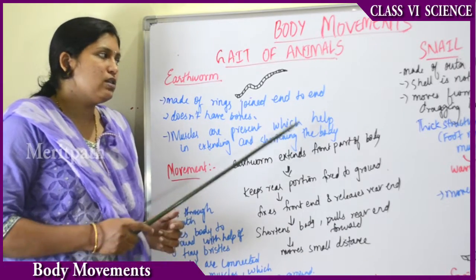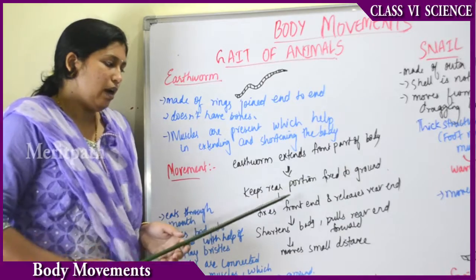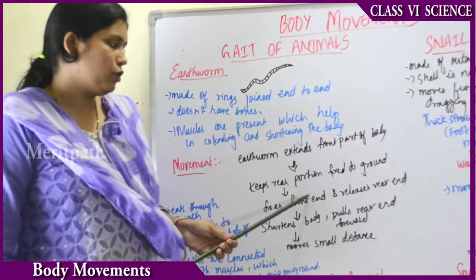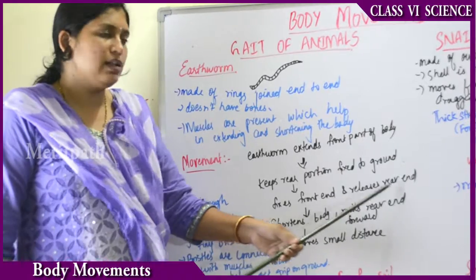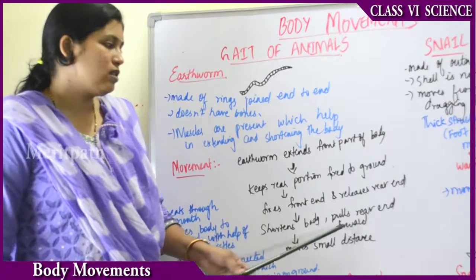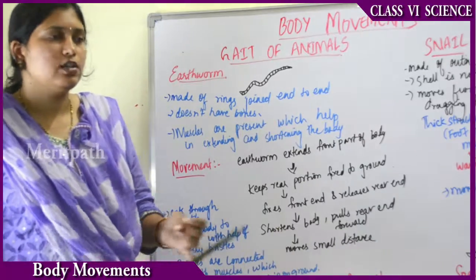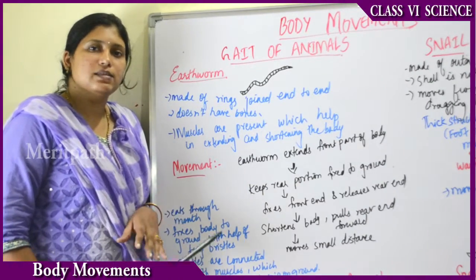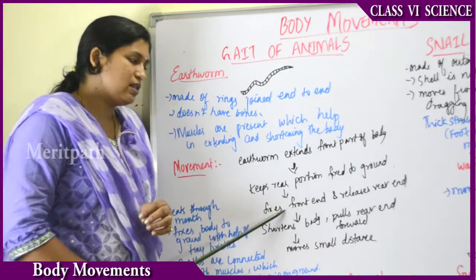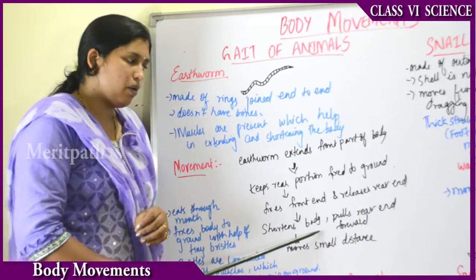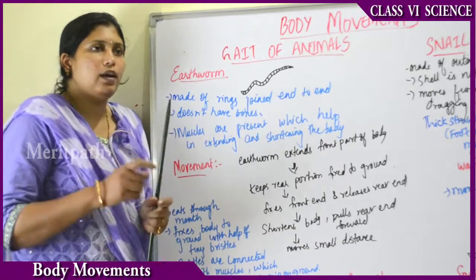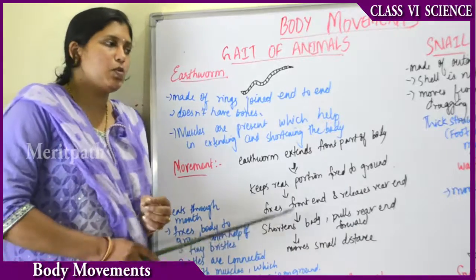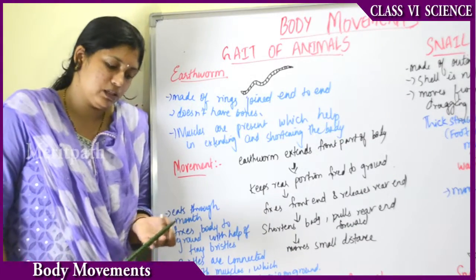How does the earthworm move? First, the earthworm extends the front part of the body and keeps the rear portion fixed to the ground. Then it fixes the front end and releases the back end. Next, it shortens the body and pulls the rear end forward. Through this process of alternate contraction and relaxation of muscles, the earthworm moves — though only a very small distance at a time.